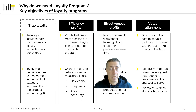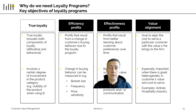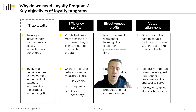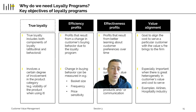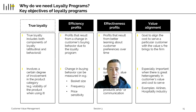What loyalty programs cannot achieve is creating true loyalty. True loyalty has two components: the first is behavioral — buying the same products regularly, which is partly captured by efficiency profits. But it also has an attitudinal component of genuinely liking the brand. Attitudinal loyalty involves a certain degree of involvement, and you cannot create this type of attitudinal loyalty through a loyalty program.